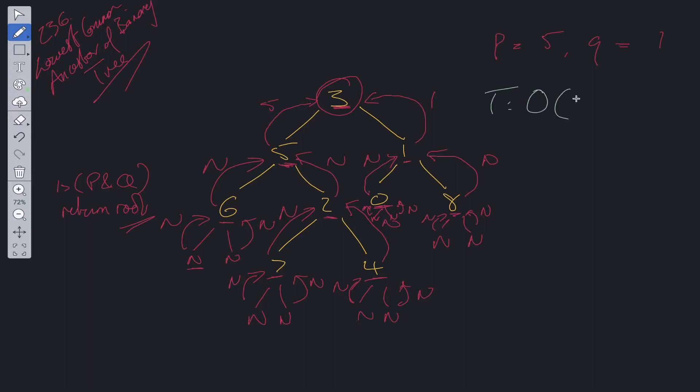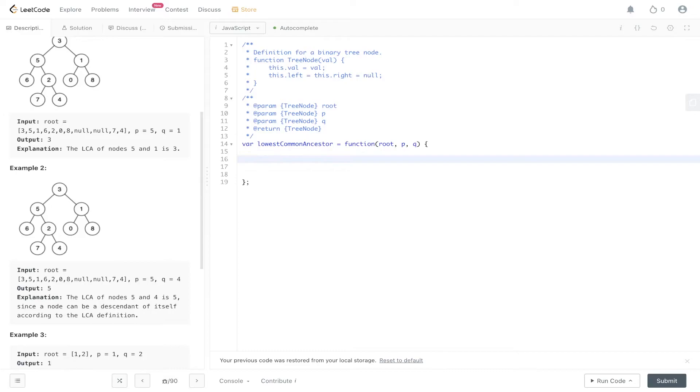In terms of time complexity, it's O(N) where we traverse through the entire tree using a stack data structure. Space is also O(N) because we're storing each value within the stack.